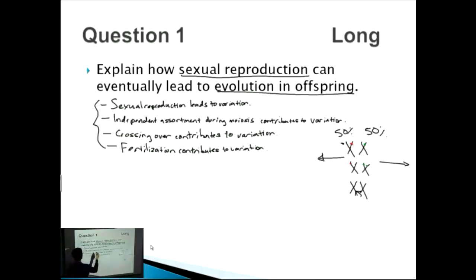Remember that this is a long question, so we're looking for about four to five points for both sexual reproduction and four to five points for evolution. So let's talk about evolution now. In regards to evolution, we've talked about variation occurring due to these three processes.